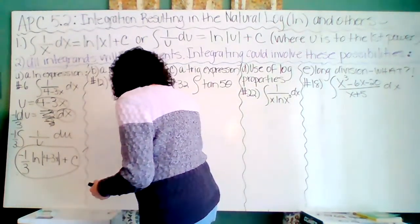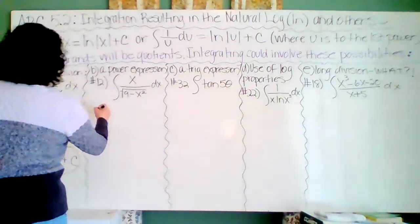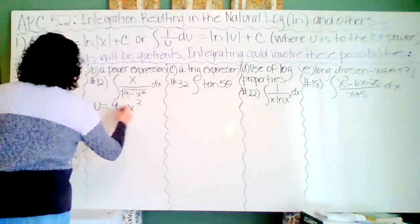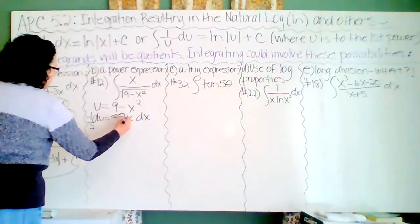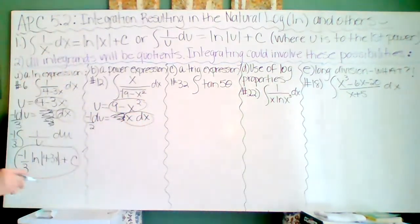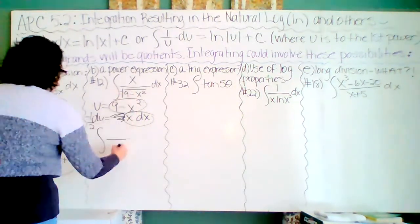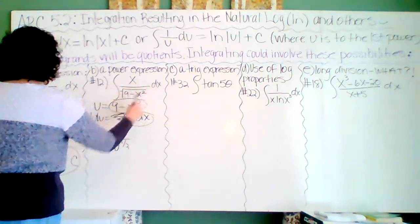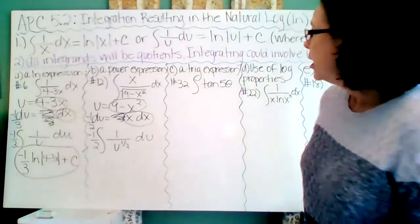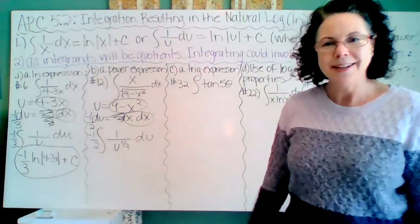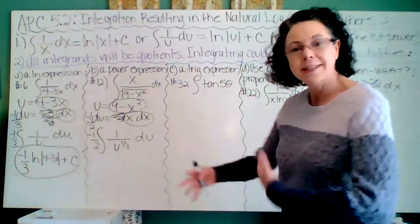The next problem has a quotient with an inside function in the denominator. I'll make u equal to 9 minus x squared, so du equals negative 2x dx, giving a negative one-half out front. The power in the denominator here is one-half — not 1 — so this is not going to result in a natural log function. They're mixing in power-rule integration you already know.